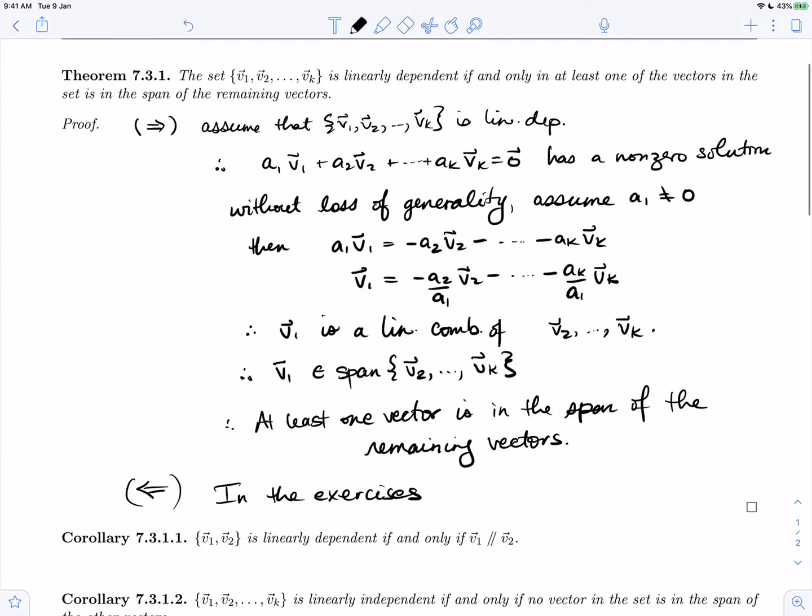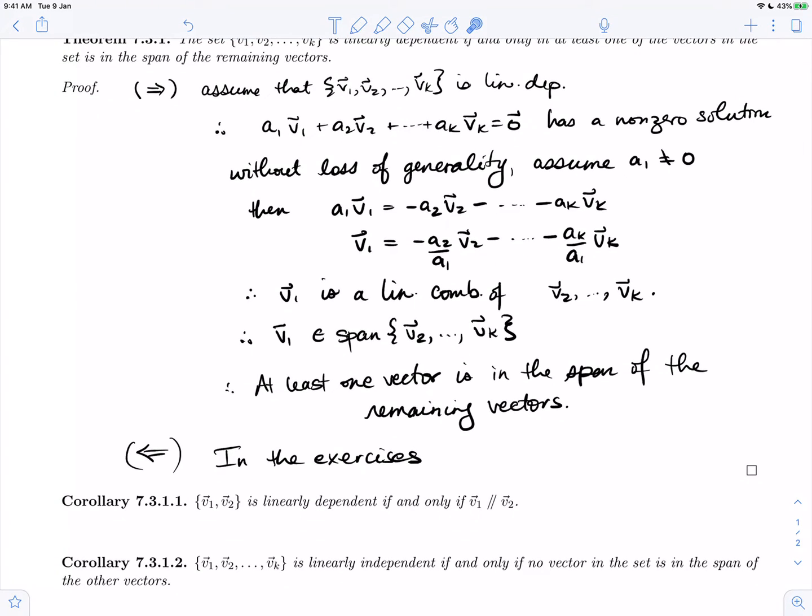So let's go on and read the two corollaries. Corollaries are results that follow immediately after a theorem. So we've got corollary 7.3.1.1 that a set of two vectors v1, v2 is linearly dependent if and only if those vectors are parallel. So our previous theorem said that one vector has to be in the span of another of the remaining vectors. Well, if there's only one vector, that means a scalar multiple.